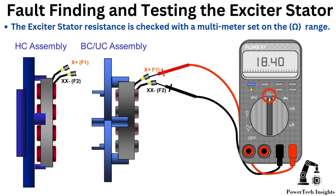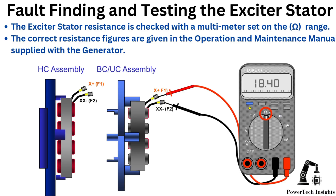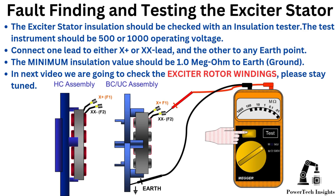The exciter stator resistance is checked with a multimeter set on the ohm range. The correct resistance figures are given in the operation and maintenance manual supplied with the generator. The exciter stator insulation should be checked with an insulation tester. The test instrument should be 500 or 1000 operating voltage. Connect one lead to either the X-plus or XX lead and the other to any earth point. The minimum insulation value should be 1.0 megaohm to earth.